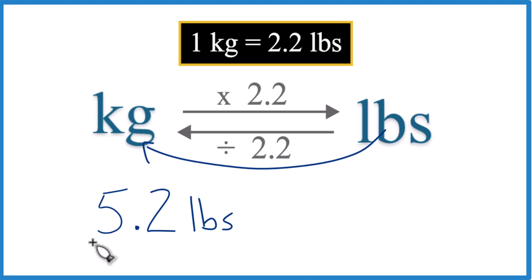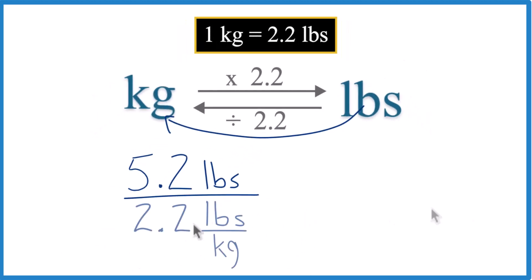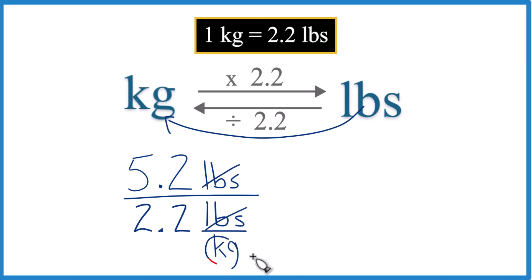So 5.2 pounds. We divide that by 2.2. And that's 2.2 pounds per kilogram, like up here. So these cancel out. We get kilograms.